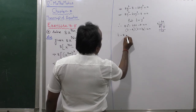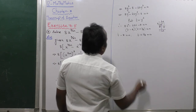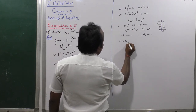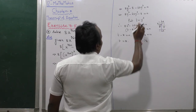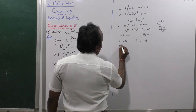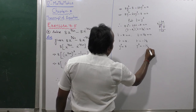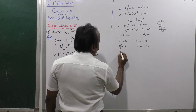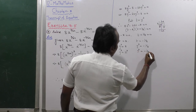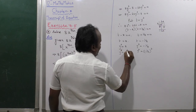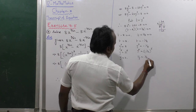So t minus 8 equals 0, and t plus 1 by 8 equals 0, giving t equals 8 and t equals minus 1 by 8. Replacing t with y cubed: y cubed equals 8, which is 2 power 3, so y equals 2; and y cubed equals minus 1 by 2 the whole power 3, so y equals minus 1 by 2.